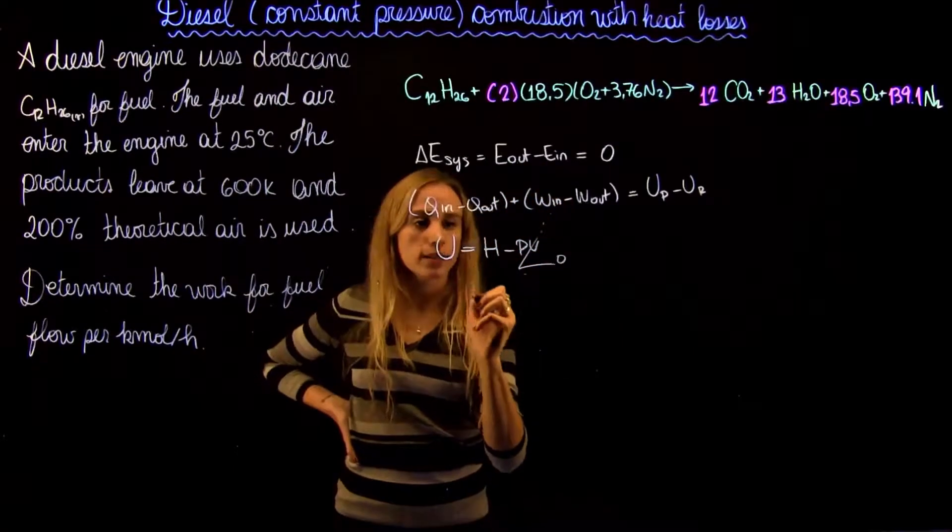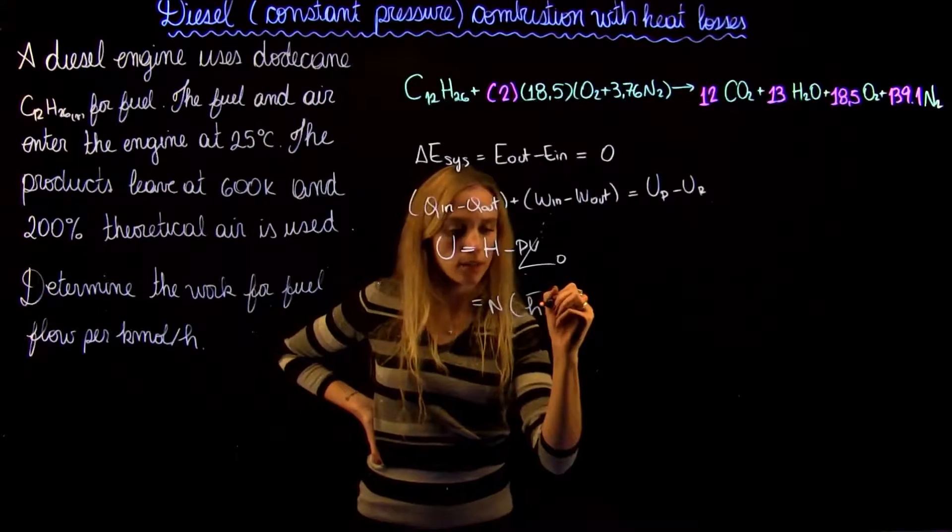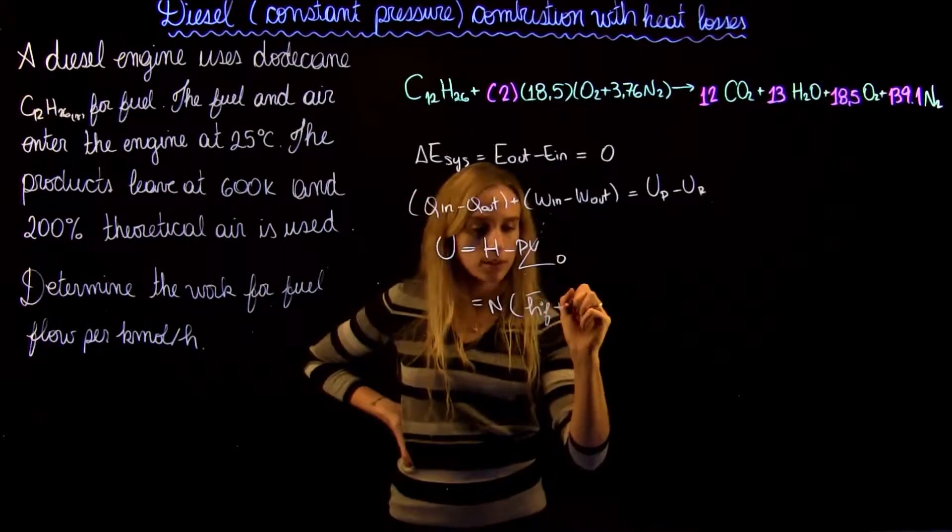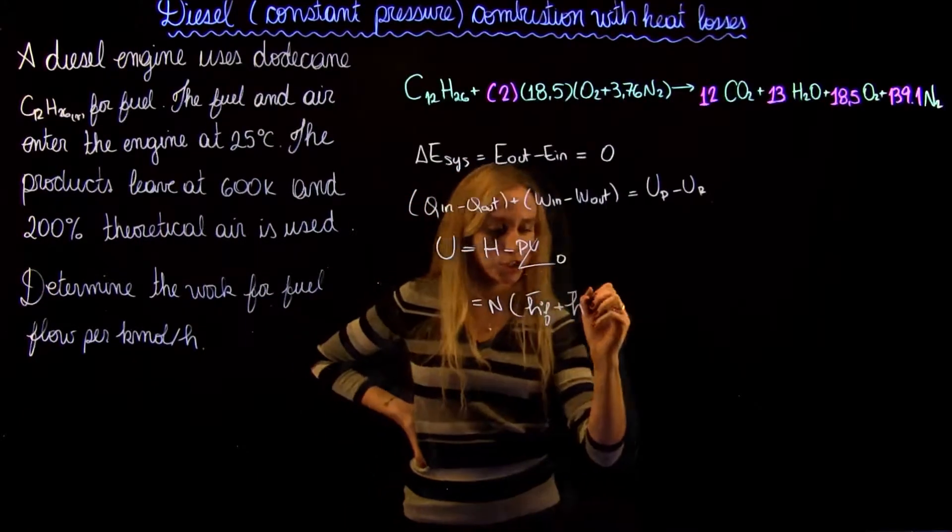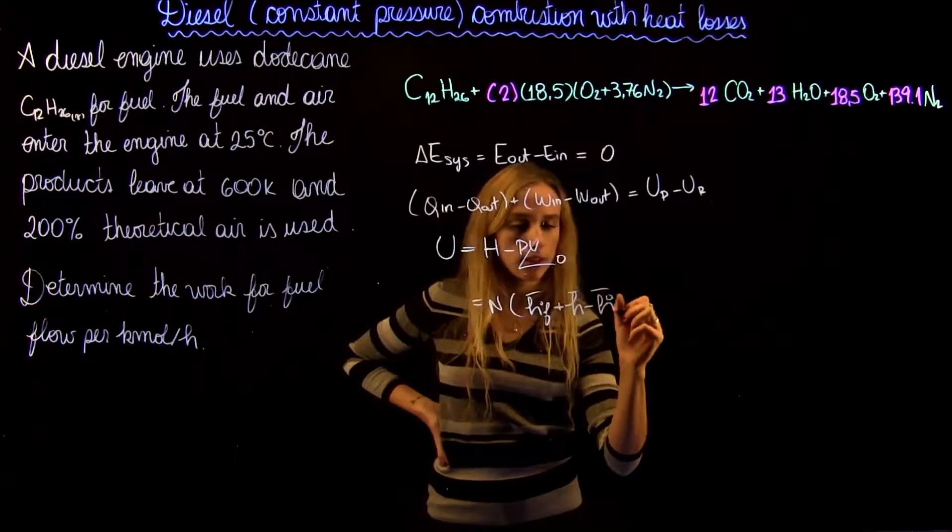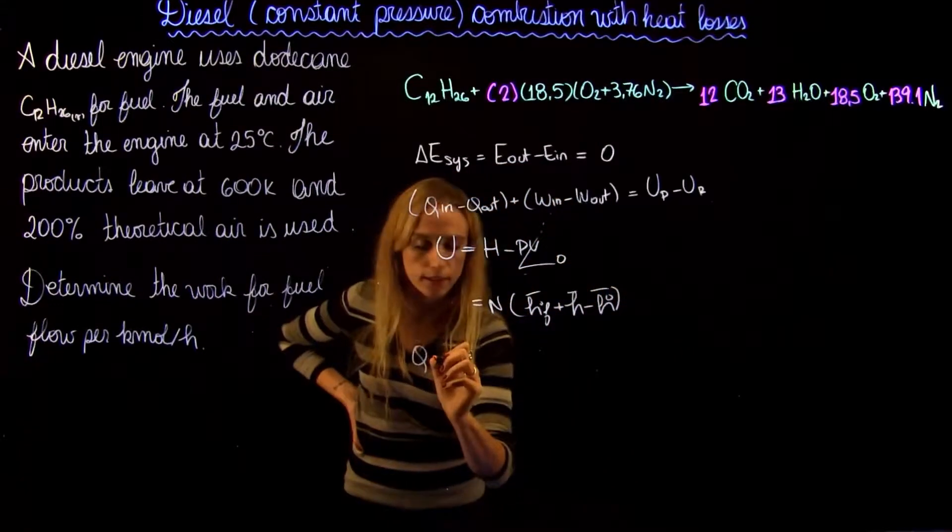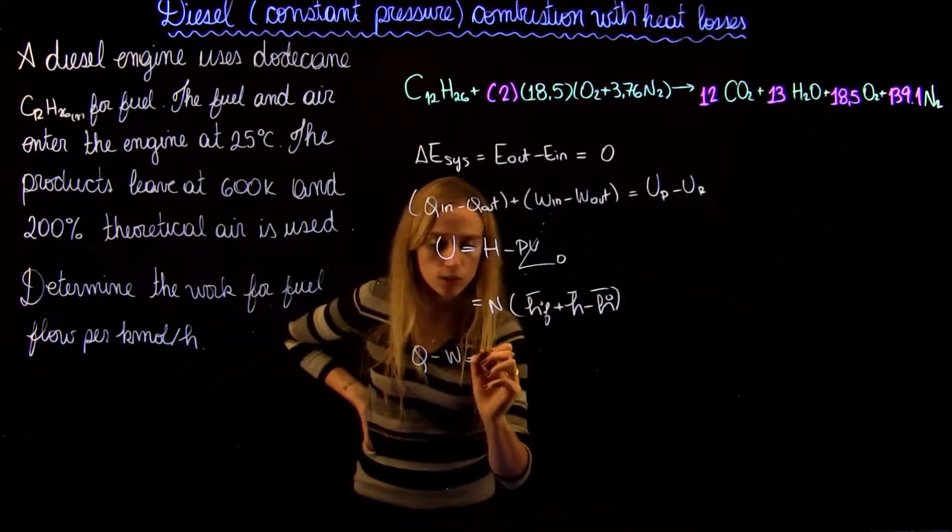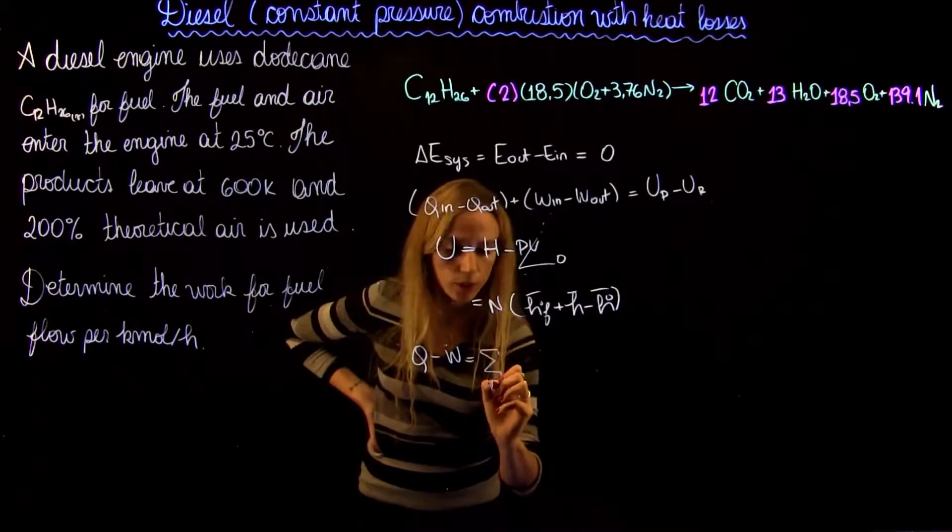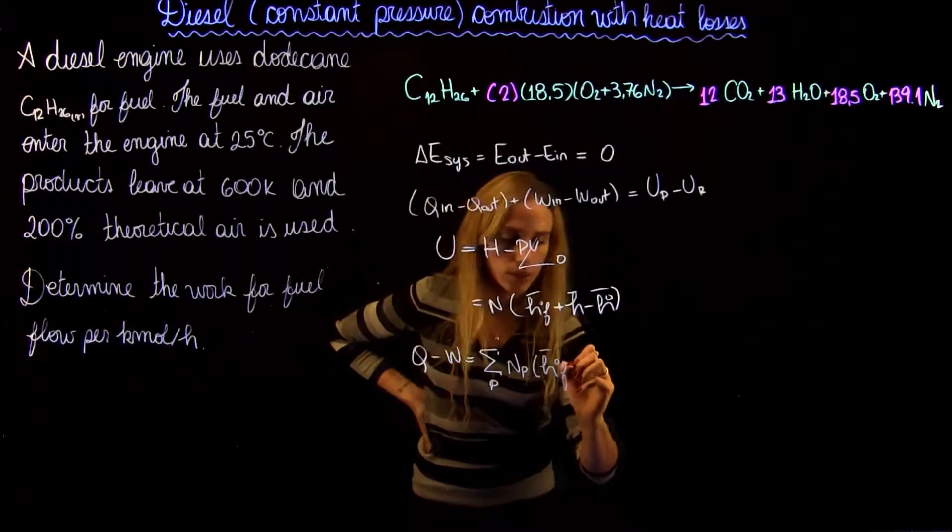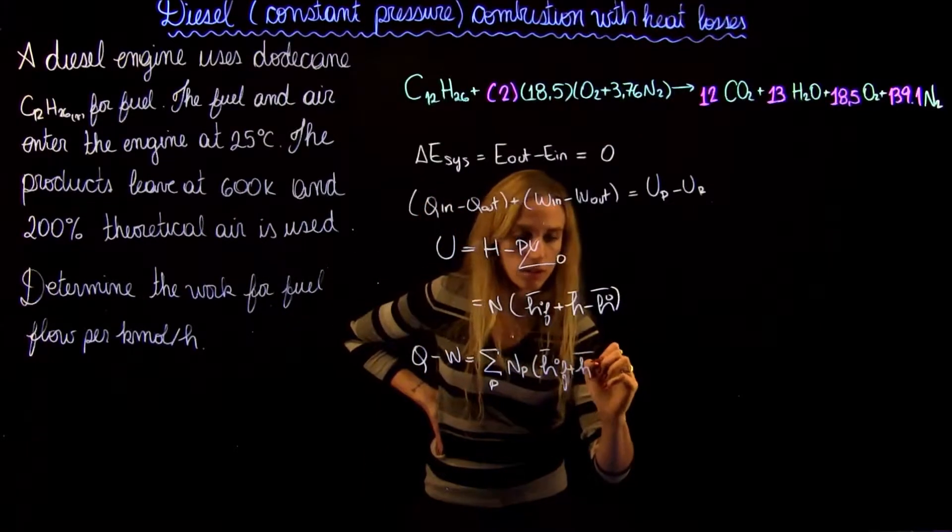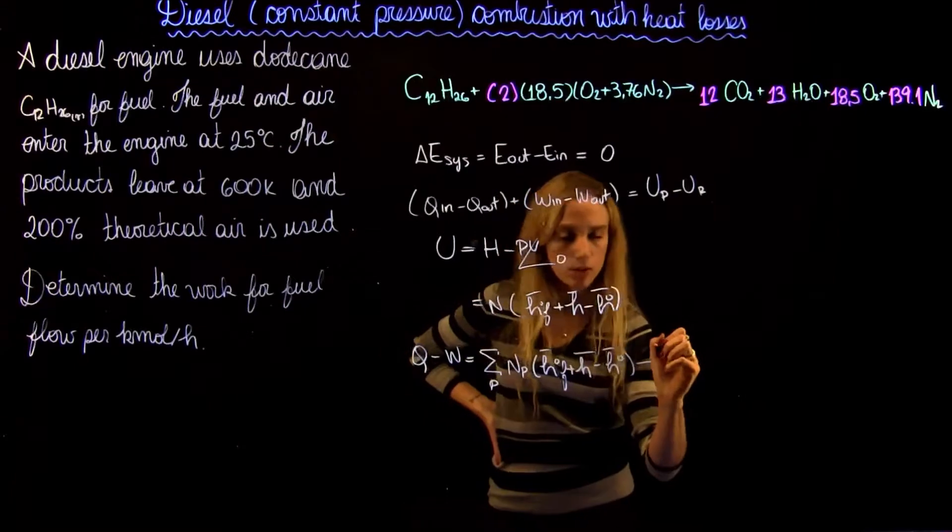And we can rewrite this as the number of moles times the enthalpy of formation plus the enthalpy of sensible heat minus the reference enthalpy. And we can rewrite this equation as Q in minus work out equals the sum of the product terms minus the reactant terms.